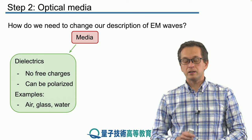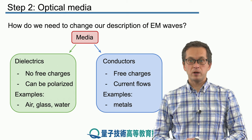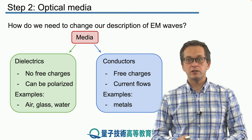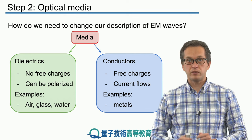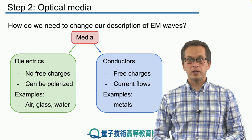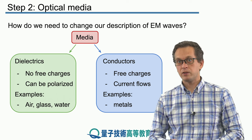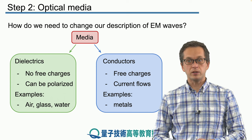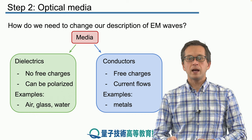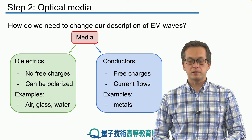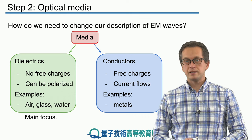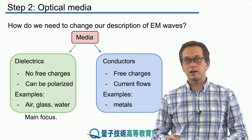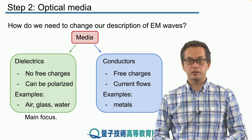The other category of optical media are conductors. The biggest difference between dielectrics and conductors is that in conductors we do have free charges — that's why they conduct electricity. This will change the behavior of electromagnetic waves in contact with metals and conductors drastically. Examples are metals. In this lesson and half of the next lesson we will concentrate on dielectrics, while the latter part of next lesson will be about conductors.